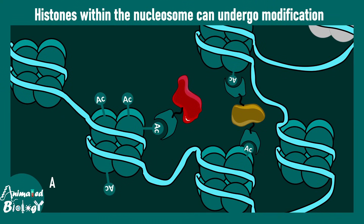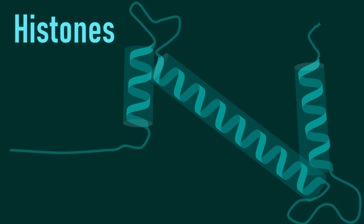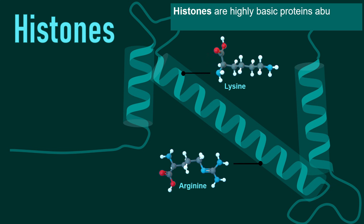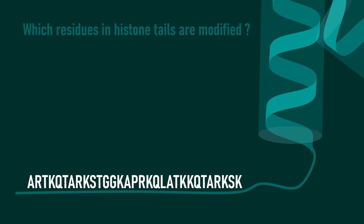This electrostatic interaction is altered when there is a modification in the histones. Histone modifications such as acetylation, methylation, or ubiquitination can all change the way histone interacts with the DNA. Histones are rich in lysine and arginine residues — they are basic proteins. The histone has a histone fold and an N-terminal tail; the N-terminal tail is the primary site for active modification.